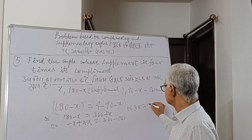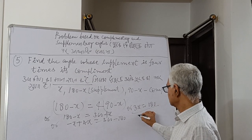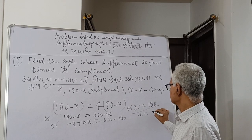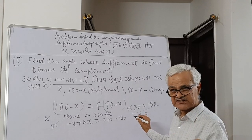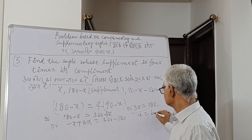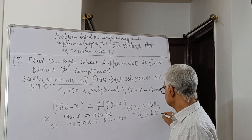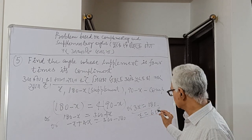3x equals 180, so x equals 180 divided by 3, that is 60 degrees. The number is 60 degrees.